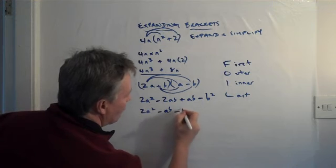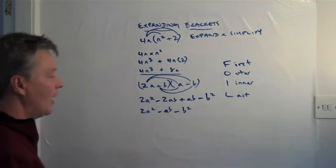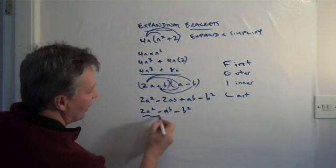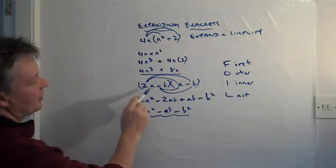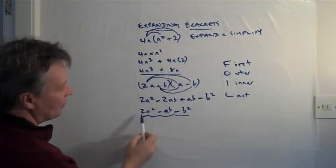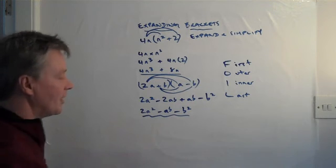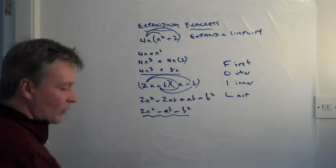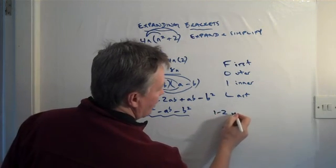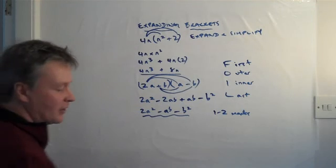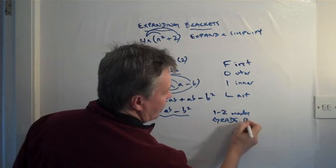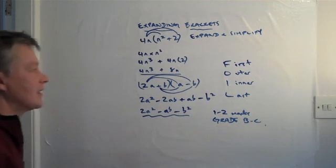And then lastly, I've got my minus b squared term. So to expand and simplify or multiply out and collect like terms of brackets, 2a plus b brackets, multiplied by a minus b brackets, I end up with 2a squared minus ab minus b squared. And that will give you something like 1 to 2 marks, and that's going to be round about a grade B or a grade C question, so B to C, something like that.